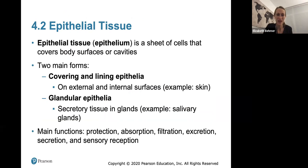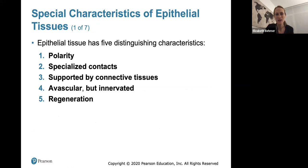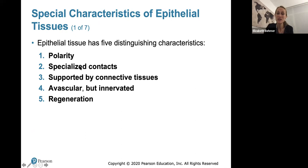Epithelial tissue covers body surfaces and cavities — it covers and lines external and internal surfaces and includes all glands. Its main functions are protection, absorption (in the digestive tract), filtration, excretion, secretion, and sensory reception. The five distinguishing characteristics: it's polar (exposed side and attached basal side), has specialized cell contacts, is supported by connective tissue, is avascular (no blood vessels) but innervated (has nerves), and has the ability to regenerate through cell division.